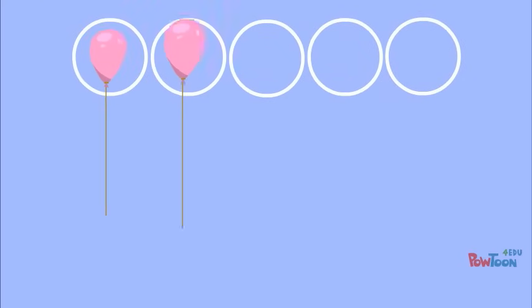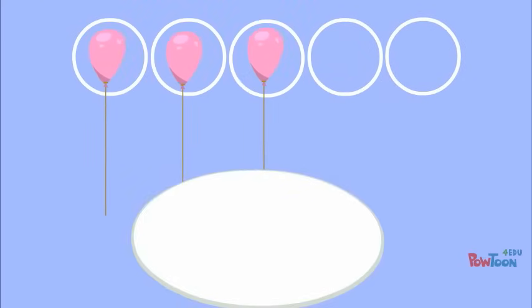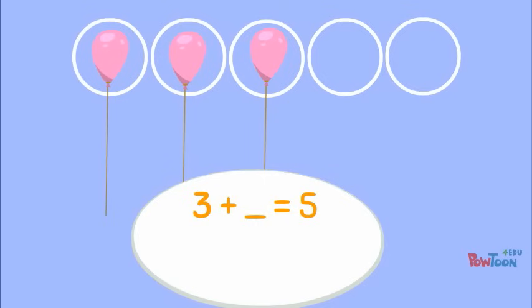I know she has 5 balloons. I know 3 are pink. So 3 plus something equals 5, or 5 minus 3 equals something. What is it? Did you say 2? If so, you're right!